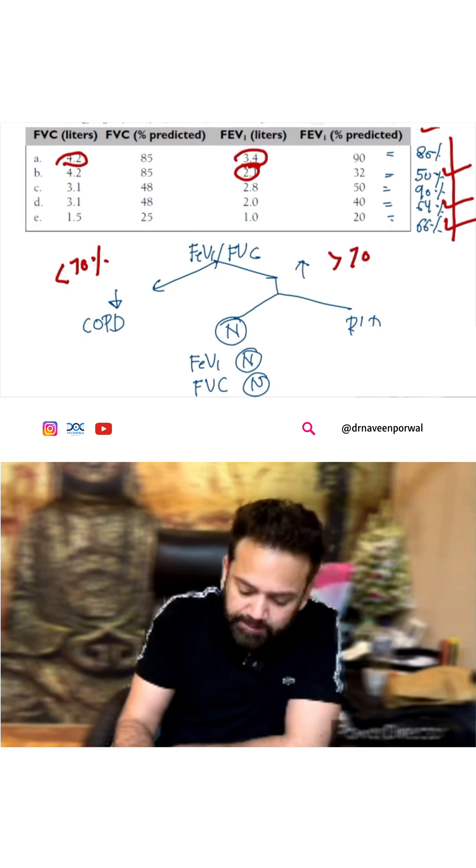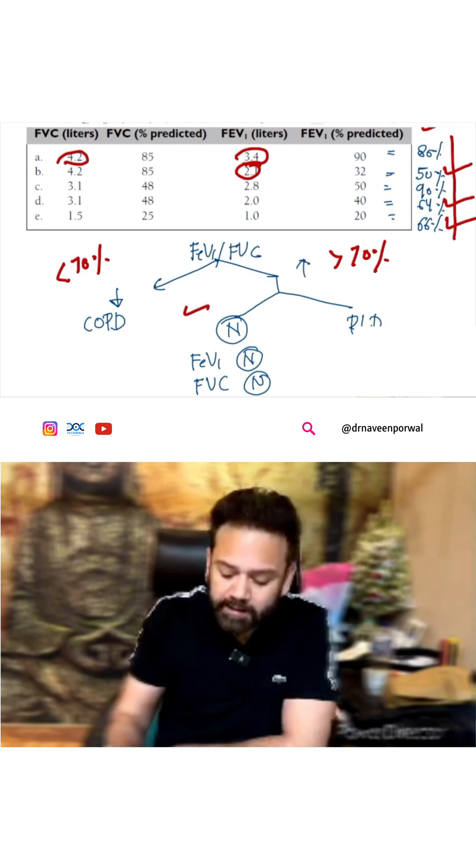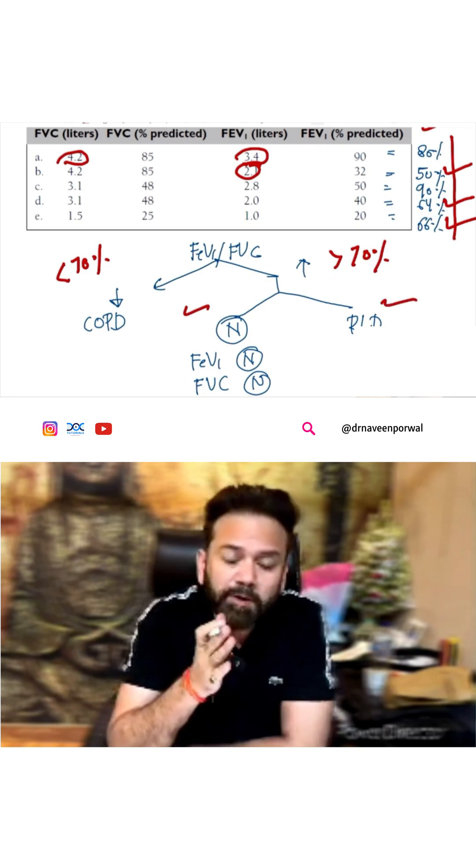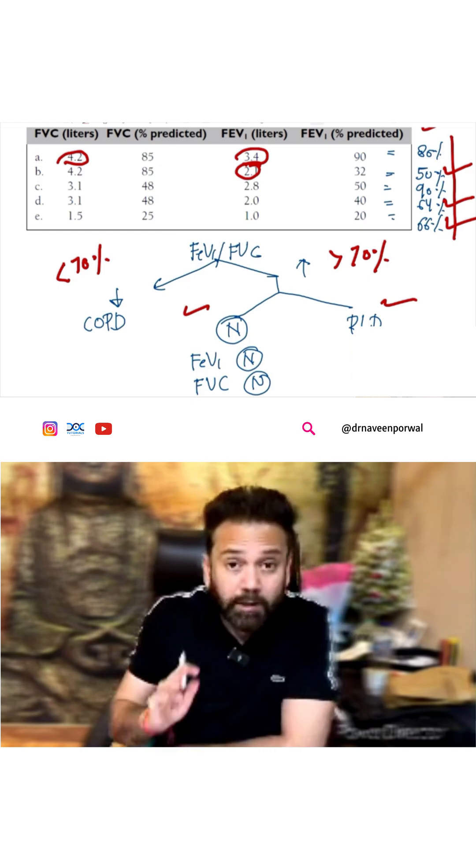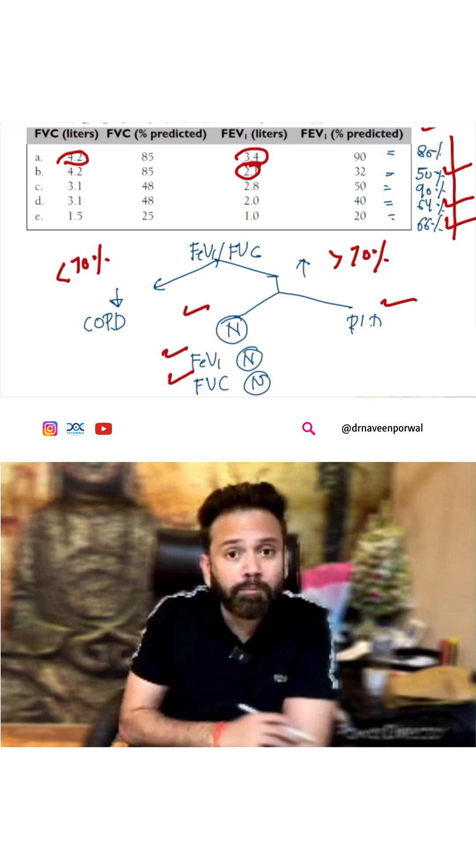If it is more than 70 percent, either it can be normal or it can be restrictive lung disease. Now how to differentiate between normal and RLD? In normal, if you see individually, FEV1 will be normal, FVC will be normal.